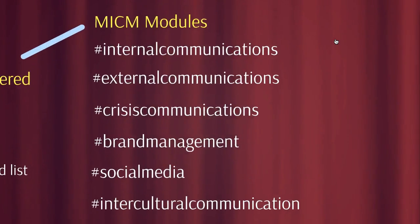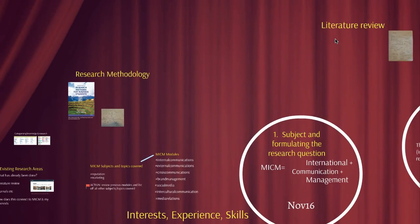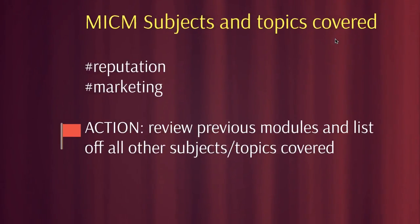The modules I've studied so far started with internal communications, then external, crisis, brand management, social media, and intercultural communication. Now I'm doing media relations. In each of those there's a stack of different topics, so I still need to go through and come up with the different topics within each module and make a list to remember all the areas I'd like to review.